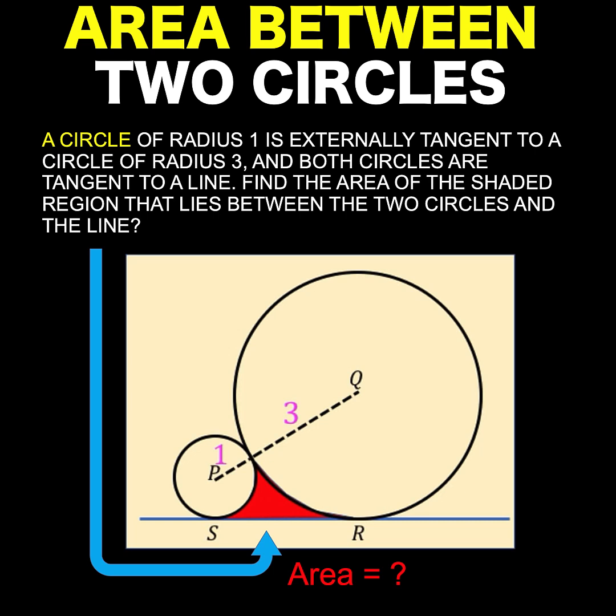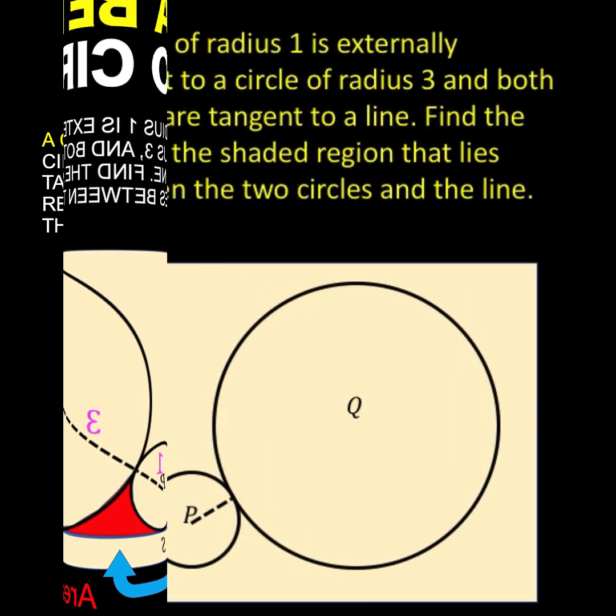Hi everyone, here is our math problem for today. A circle of radius 1 is externally tangent to a circle of radius 3, and both circles are tangent to a line.